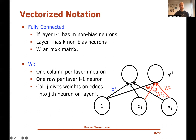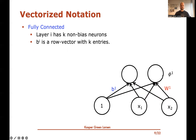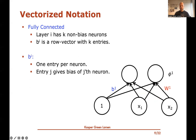The second column of the weight matrix stores the weights from X1 and X2 into the second neuron in layer I. Also, if we have K non-biased neurons in layer I, then the bias vector B_I is a row vector with K entries — one for each neuron in layer I. The j-th entry gives the bias of the j-th neuron, so the first entry is the bias of the first neuron and the second entry is the bias of the second.